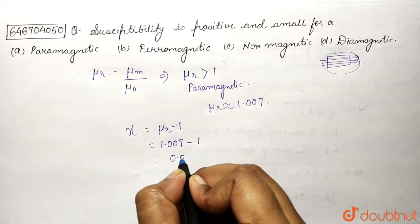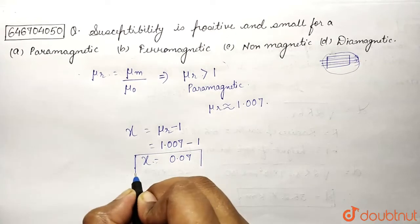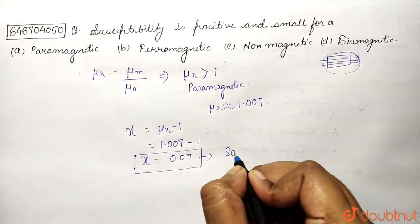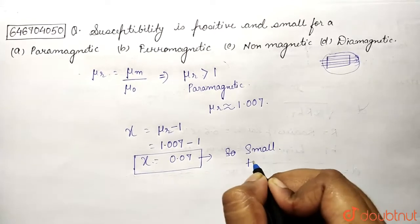it equals 0.007. So for paramagnetic material, you can see that the susceptibility is small and positive.